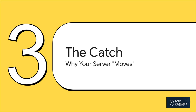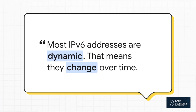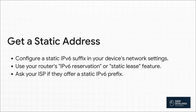Now, hold on. Before you go off and launch your own personal Google from your bedroom, there is one tiny little catch we need to talk about. Your server's brand new public address might not stick around forever. Just like your old IPv4 address, most ISPs give you a dynamic IPv6 address. That means it can change — when you restart your router, or sometimes just after a couple of days. And when the address changes, any links you shared are now broken. Your server has basically moved house and didn't tell anyone its new address. But don't panic — this is a totally solvable problem. Often you can just go into your computer's network settings and set a static suffix, which is just the last part of the address. An even better way is to log into your router's admin page and look for a setting called IPv6 reservation or static lease. This tells your router to always give your laptop the exact same address. And some ISPs will even give you a whole static block of addresses if you just ask.